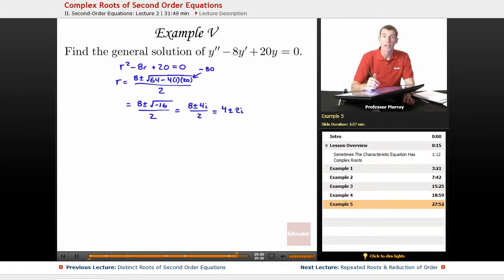So as usual, the complex roots come in conjugate pairs. The 4 is my alpha, the 2 is my beta, and I'm going to drop the alpha and beta back into the generic form for the general solution that we had back at the beginning of the lecture.